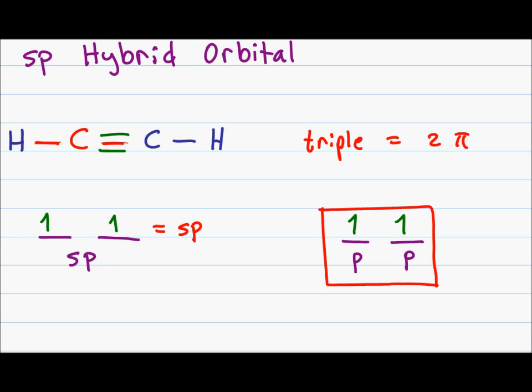The sp hybrid orbital is now capable of accepting 2 bonds, 1 each at its sp hybridized electrons for 2 sigma bonds, and 2 additional bonds at its p electrons which are not hybridized for its 2 pi bonds.